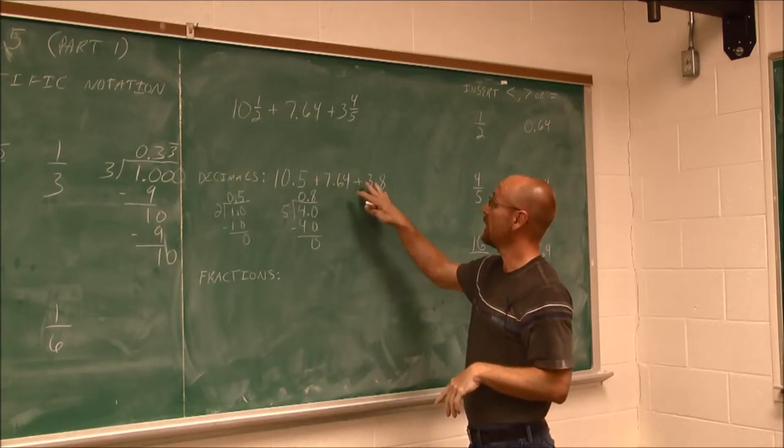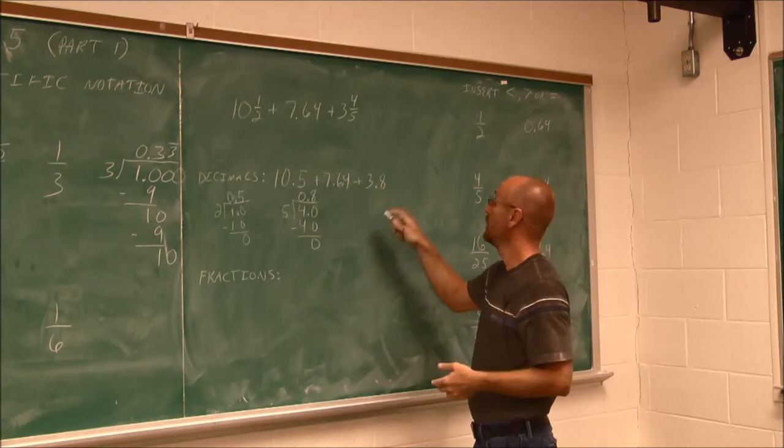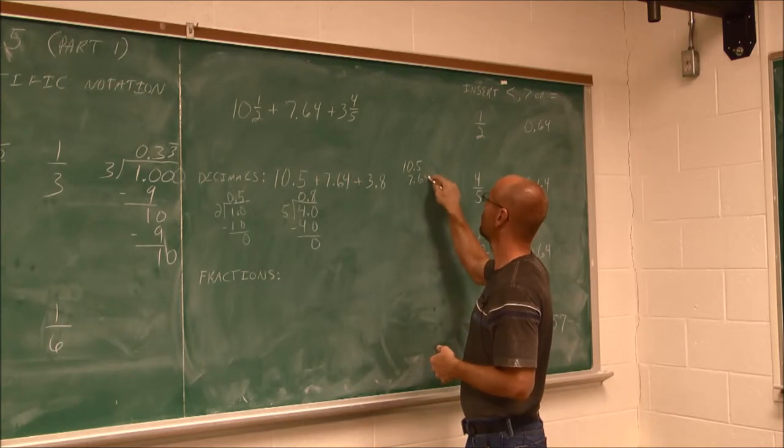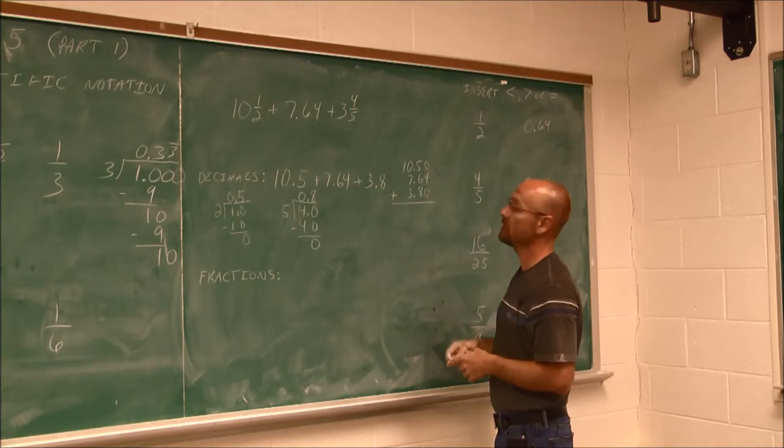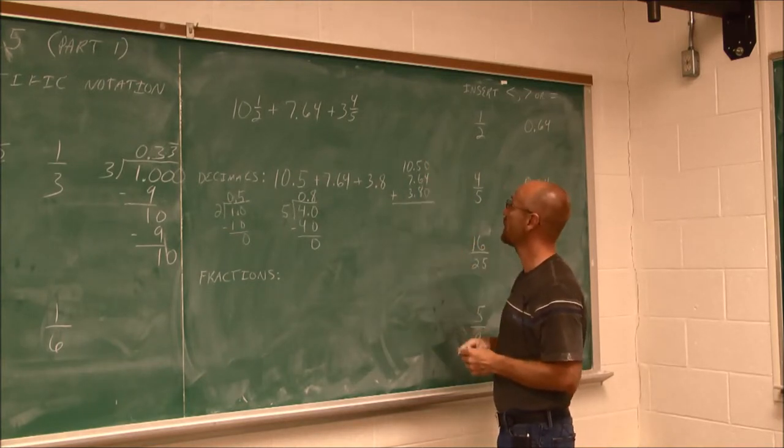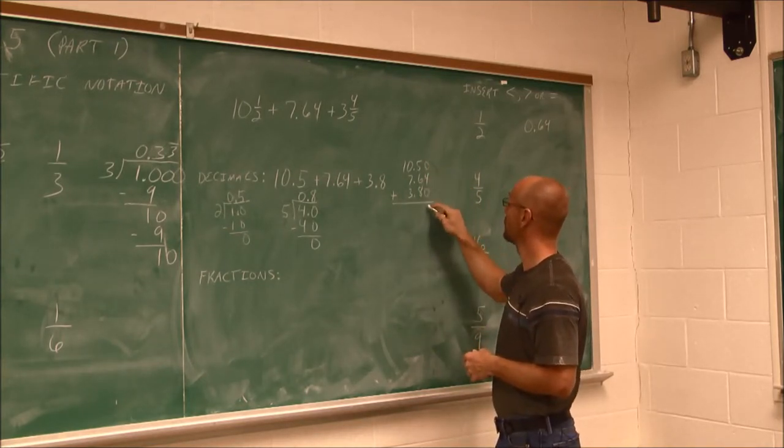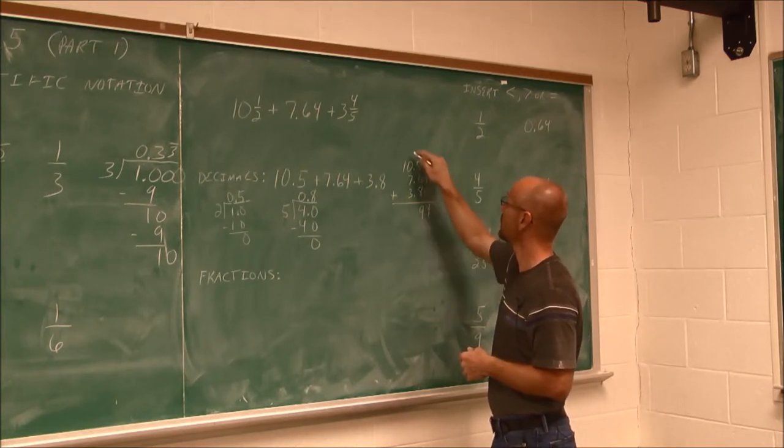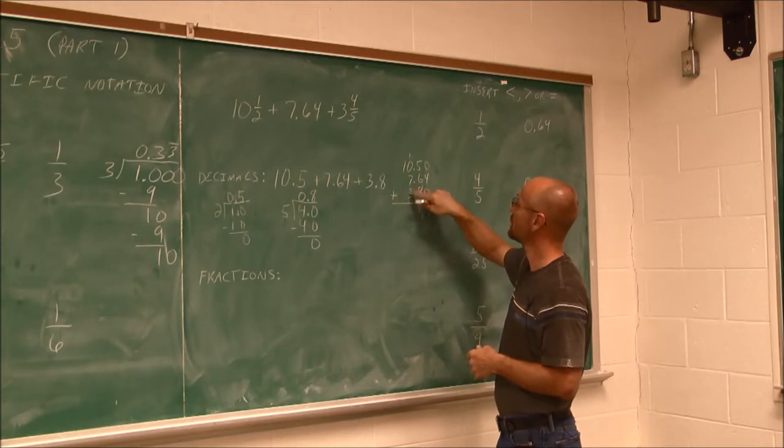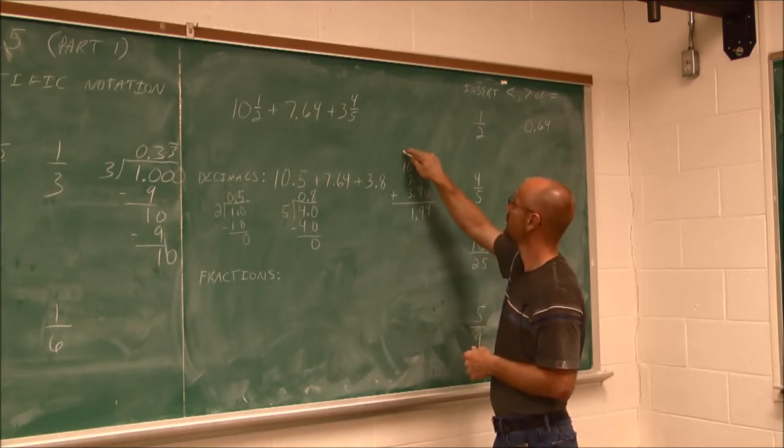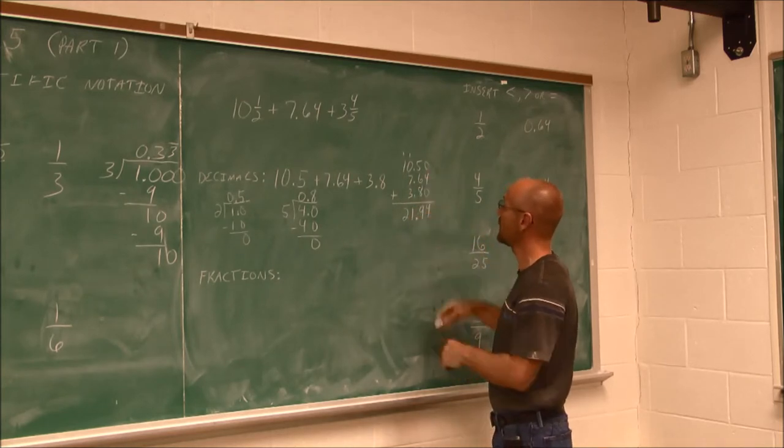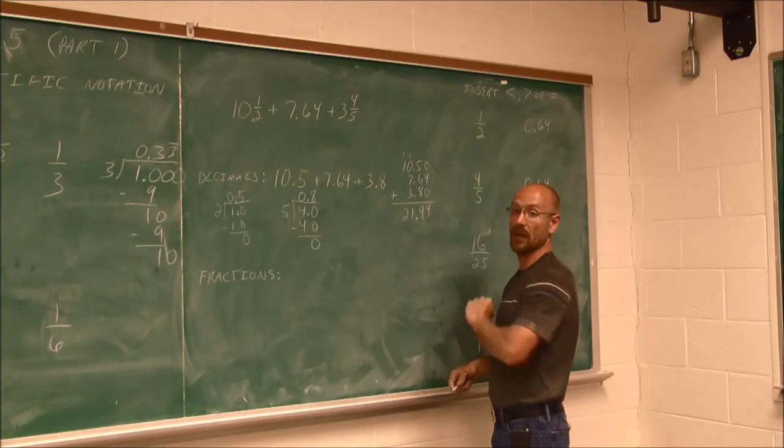Now that they're all decimals, I could add this up. To add decimals, we line up all of our decimal values. 0, 4, and 0 is 4. 8 and 6 is 14. And 5 is 19. Carry the 1. 7 and 3 is 10. Plus that 1 is 11. Carry the 1. 1 and 1 is 2. Since we lined it up, this value is 21.94.